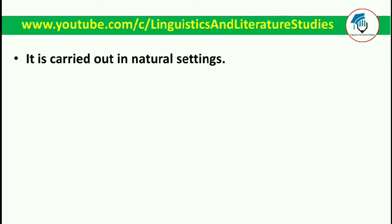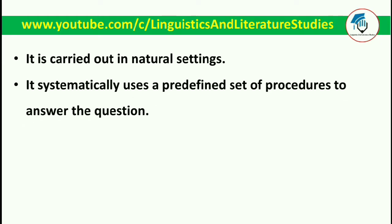Next, it is carried out in natural settings. Viewers, many research problems are carried out in a lab under controlled conditions — usually science-related research is conducted in a lab. But qualitative research is social research; we investigate and analyze the nature and behavior of problems. For this, we don't need a particular lab or controlled conditions — we investigate in natural settings and observe factors present in the natural environment. It also systematically uses a predefined set of procedures to answer the questions. For investigating any problem, we have some predefined procedures — we may either formulate a questionnaire or any other procedure to answer our research problem.